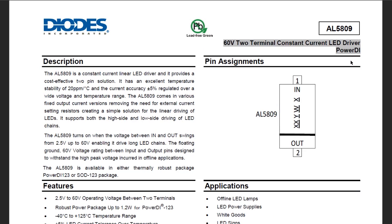Next I had to figure out how to drive these at constant current, and I needed to decide between a switch mode driver and a linear mode driver. A switch mode driver would be more efficient generating less heat, but it needs more parts which would increase cost and complexity. So in the end I went with a linear driver, which is the AL5809.